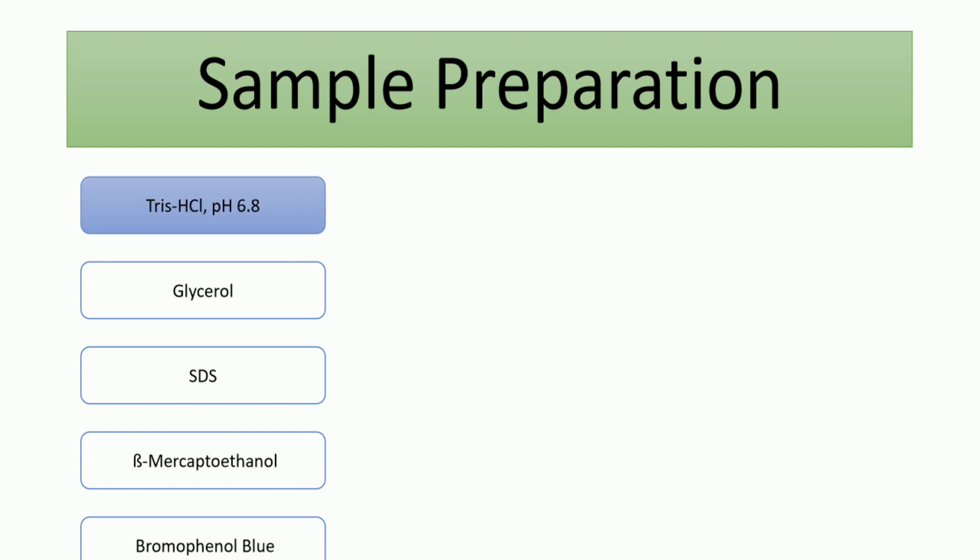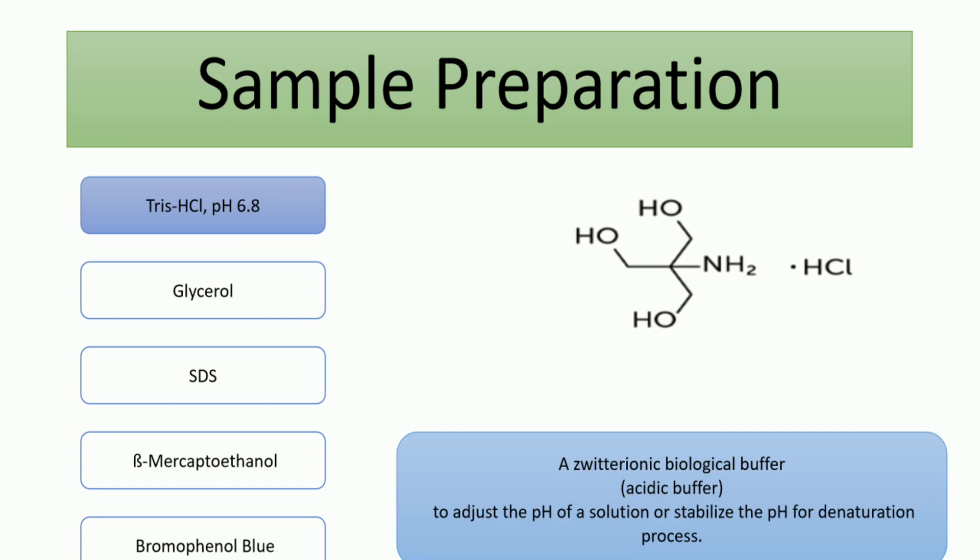These are the chemical materials used in combination to prepare samples. First, we have Tris. Tris is a zwitterionic buffer; it's a little bit acidic at pH 6.8. The main purpose of this buffer is to adjust pH to enable us to denature the proteins.